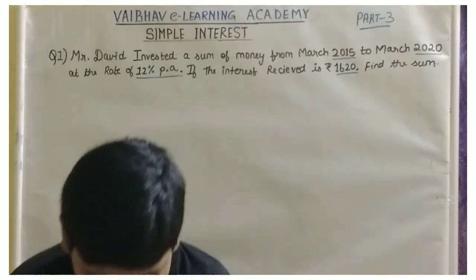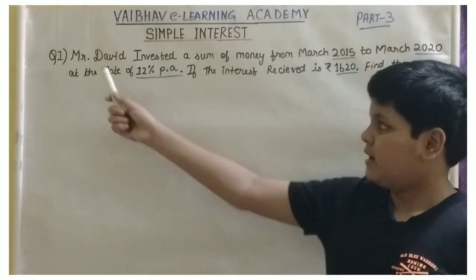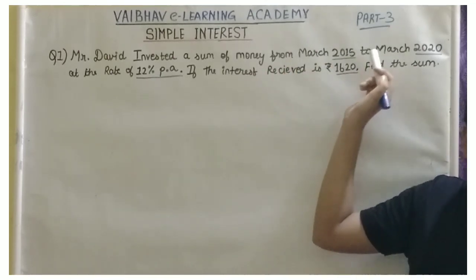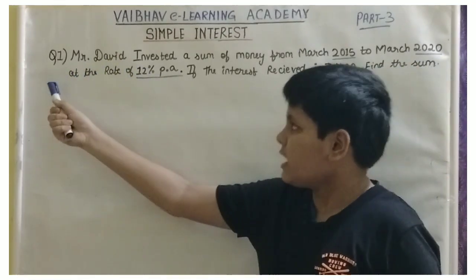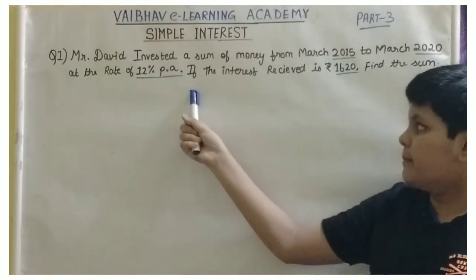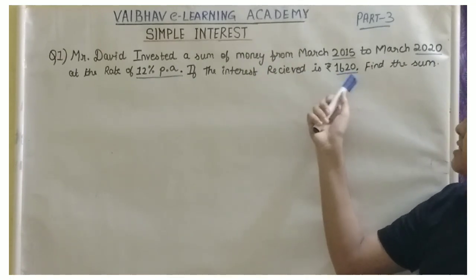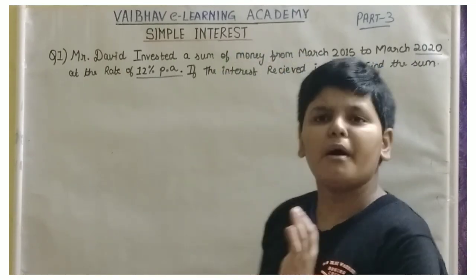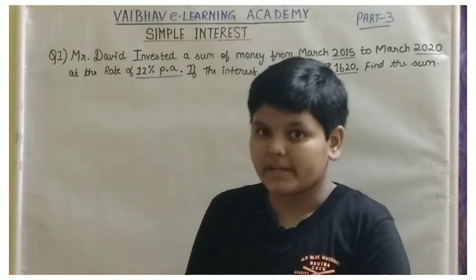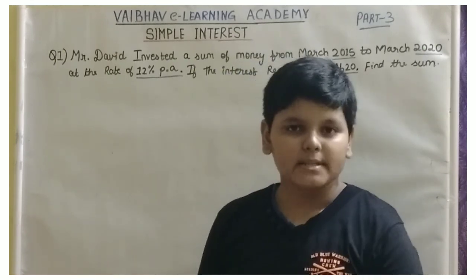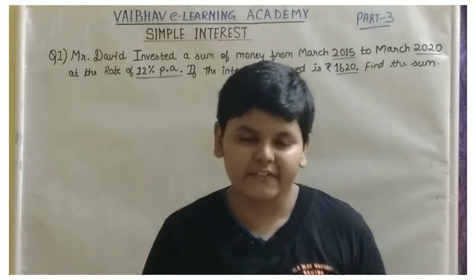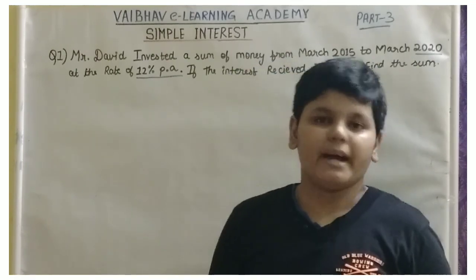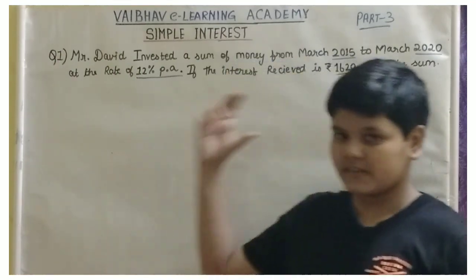Let us start with a question. The first question given to us is: Mr. David invested a sum of money from March 2015 to March 2020 at the rate of 12% per annum. If the interest received is 1,620, find the sum. Mr. David has invested some amount of money — we do not know that amount, and that is the Principal. The Principal is the amount which is borrowed or given. So we do not know what is the amount invested by Mr. David — that is the Principal Amount. The interest is given to us, and we are going to use the formula for the Principal.